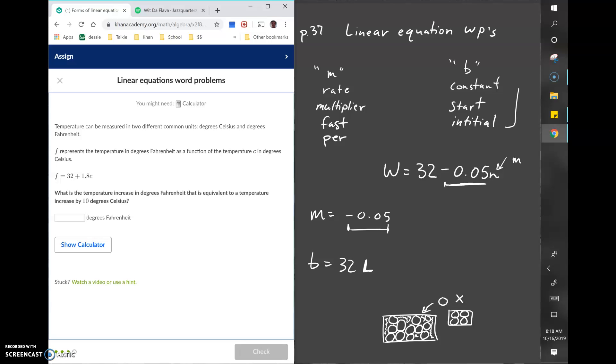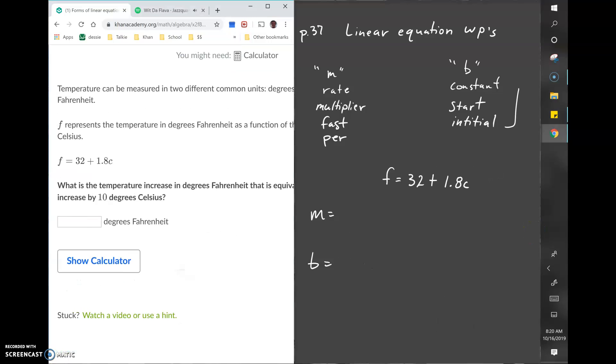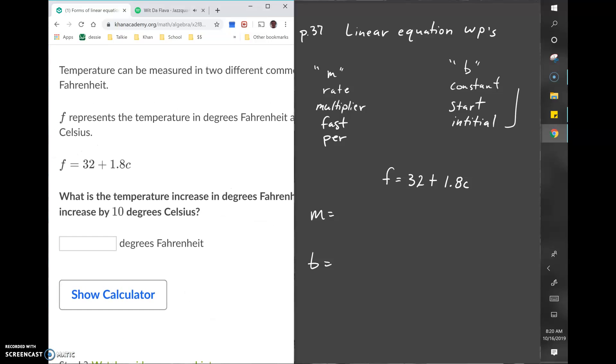Pause the video and see if you can identify the M and B values. In this context, the equation given is just a conversion equation to go from Celsius to Fahrenheit. The rate or M value here is 1.8, and the B value is 32.